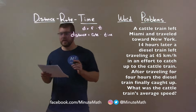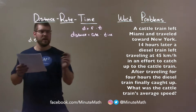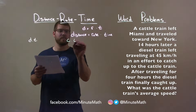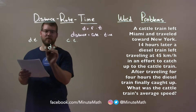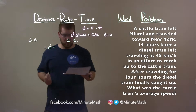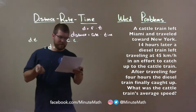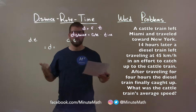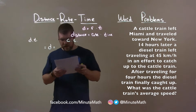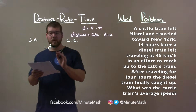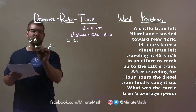So one thing they tell us here — we have the diesel train, I'm going to call this DT, and we have the cattle train, CT. Their distance — the distance we're going to find for each one — is going to be the same total where they caught up. So they're going to catch up at the same total distance from Miami, traveling toward New York. When they meet, that distance is going to be the same in our calculation. Distance equals rate times time for both of them.